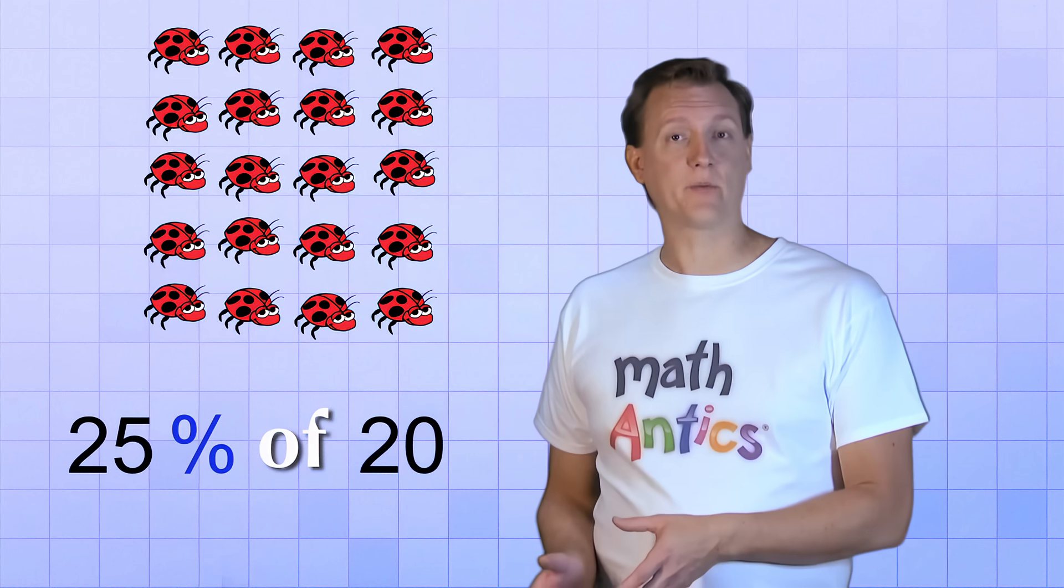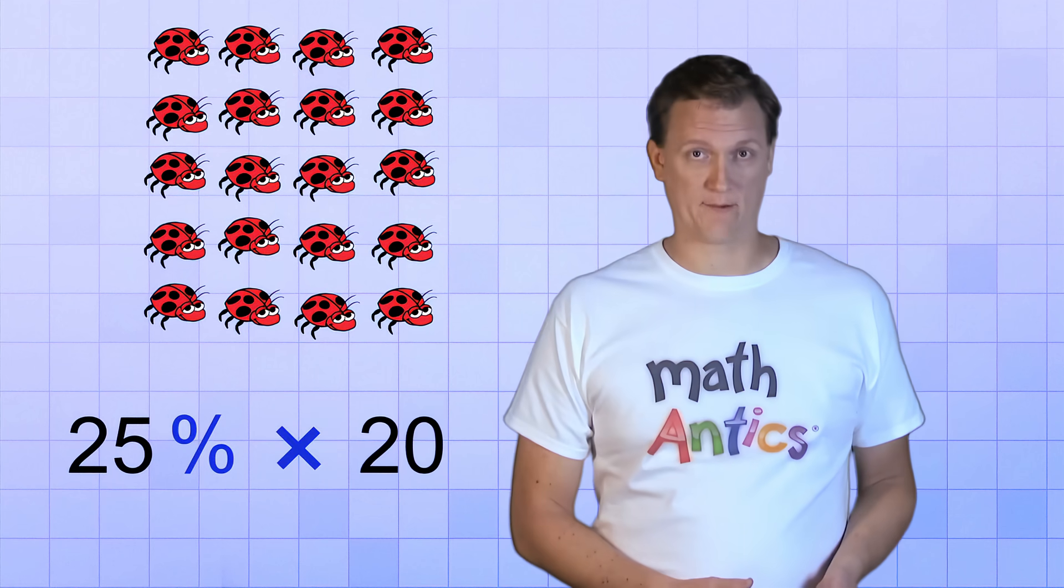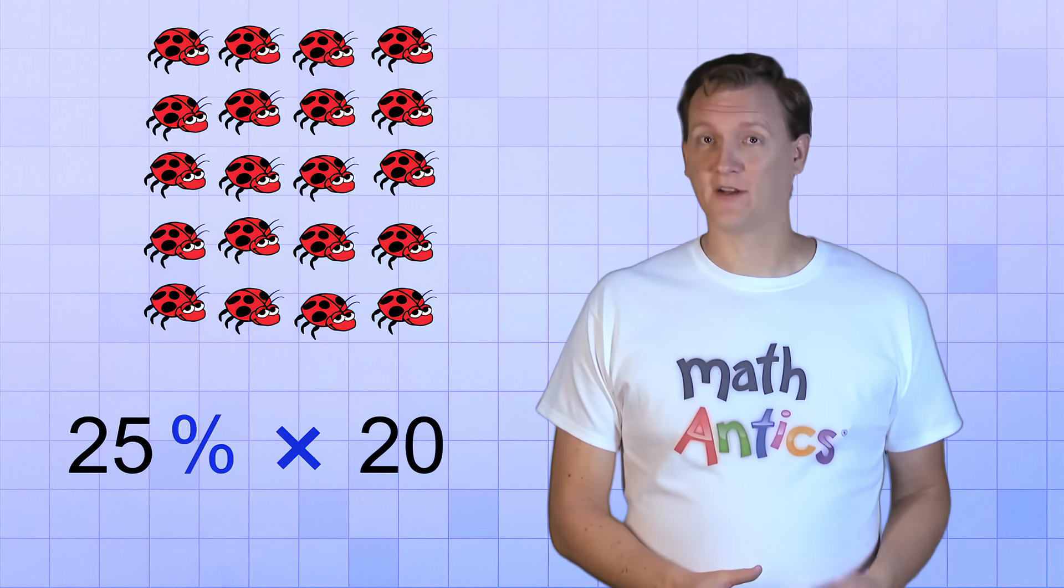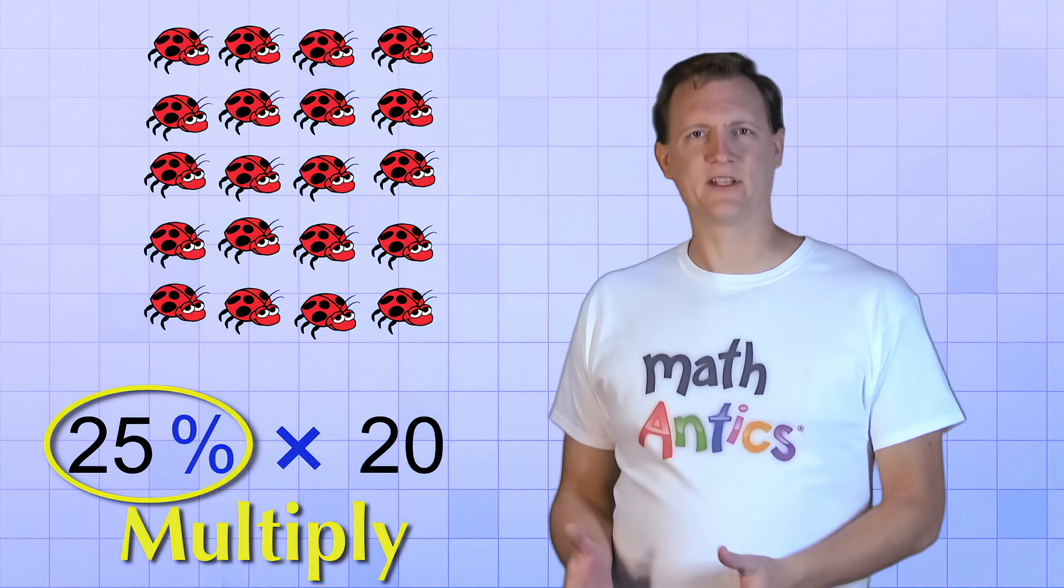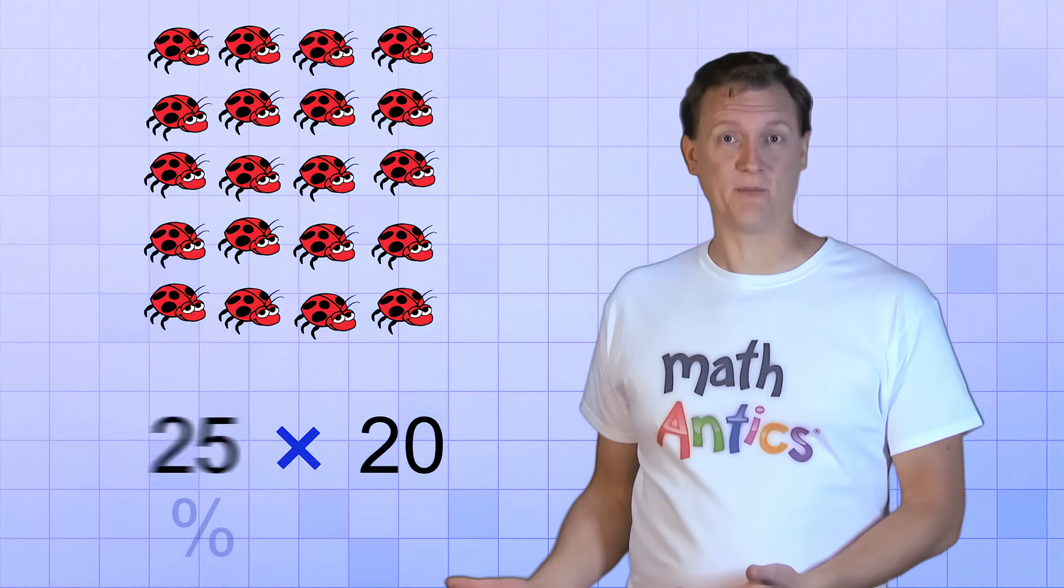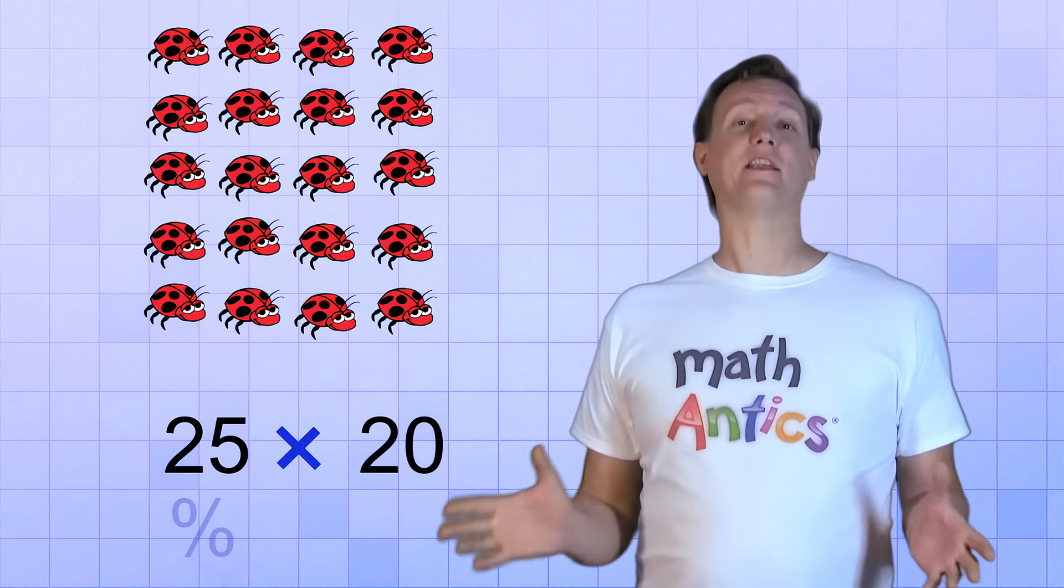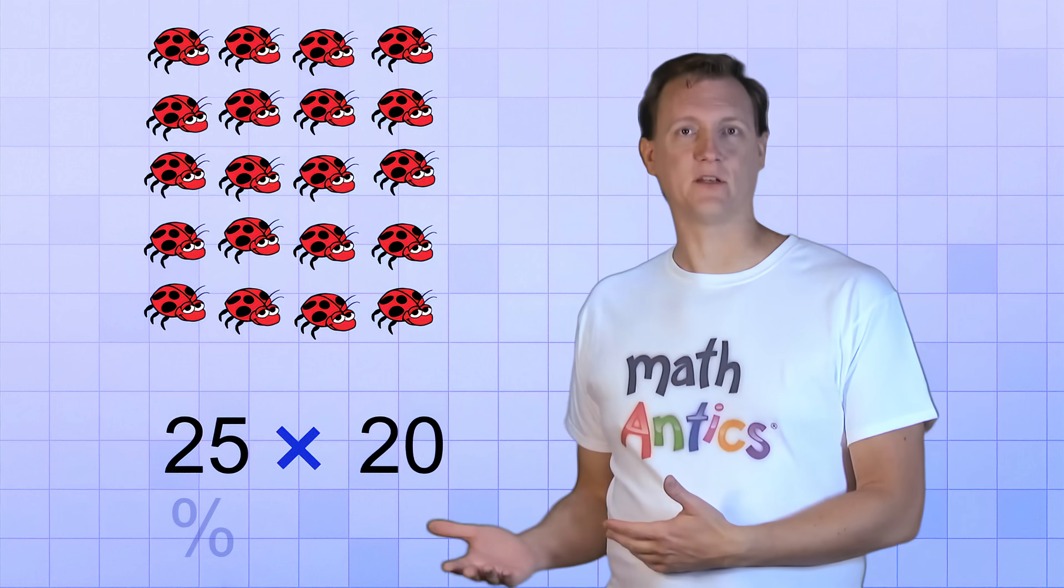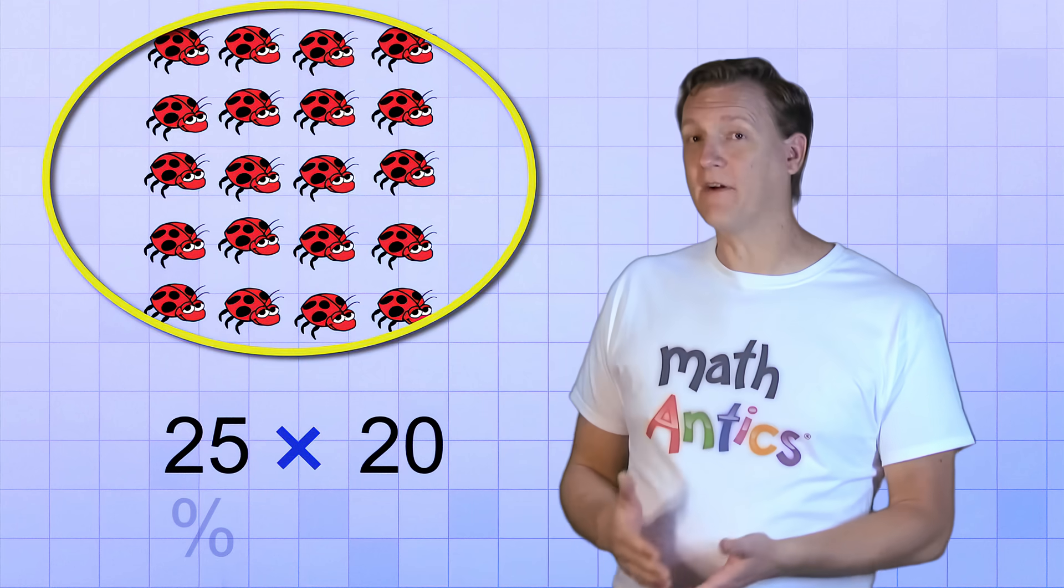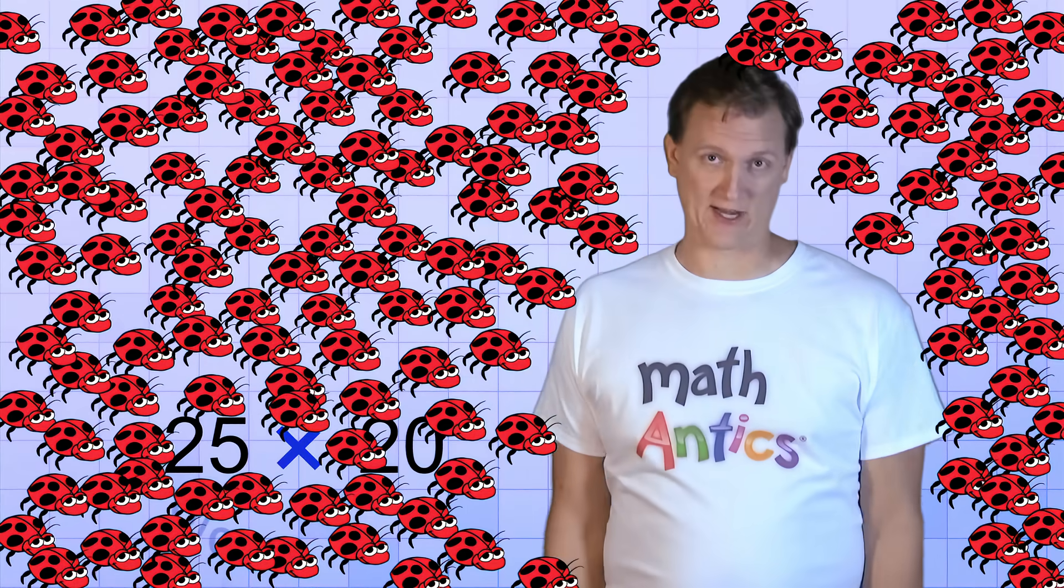When we have 25% of 20, that means the same as 25% times 20. Great! So all we have to do to find a percent of a number is to multiply. But how do we multiply a percent and a number together? Do we just forget about the percent sign and multiply the numbers together? No! If we did it that way, our number would be way too big! 25% should be a smaller part of 20 ladybugs. But if we did 25 times 20, we'd get 500 ladybugs! Clearly that's not the right answer!